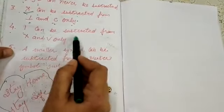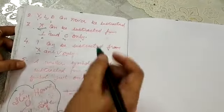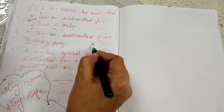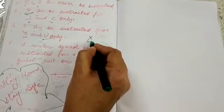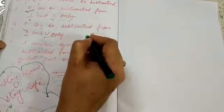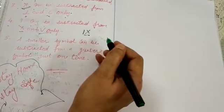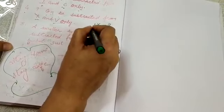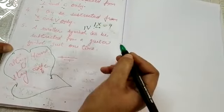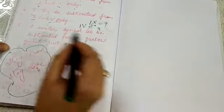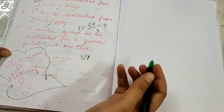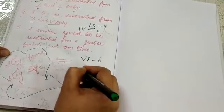The fourth property is: I can only be subtracted from X and V. For example, to write 9: X means 10, and before X you write I, so IX equals 9. To write 4: before V you write I, so IV equals 4. To write 6: after V you write I on the right side, so VI equals 6. And 11 is XI.